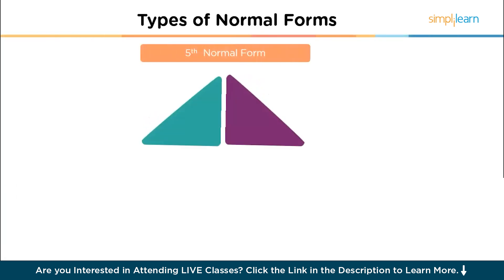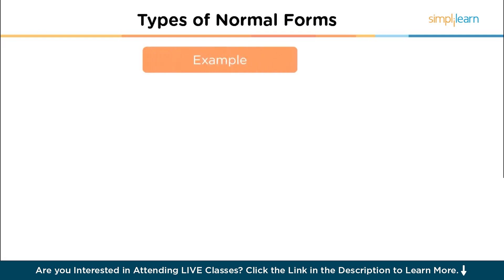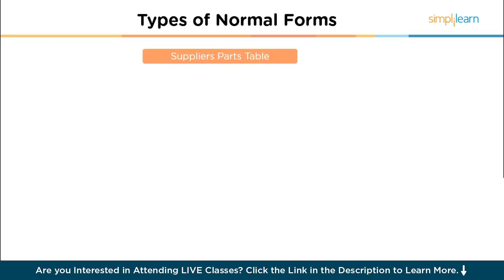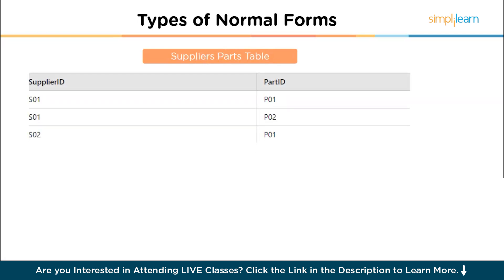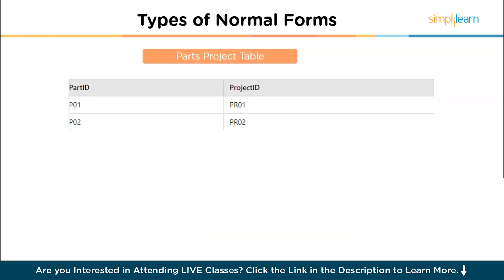Let's talk about the fifth normal form (5NF). A table is said to be in 5NF if it is in 4NF and cannot be decomposed into any smaller tables without losing information, also known as join dependency. Consider a table that records the relationship between suppliers, parts and projects. The problem is join dependency: the table has a complex relationship between suppliers, parts and projects that can be decomposed further. To achieve 5NF, we break the table into smaller related tables — the supplier-part table, the supplier-project table and the parts-project table — removing the complex relationship and eliminating the join dependency.